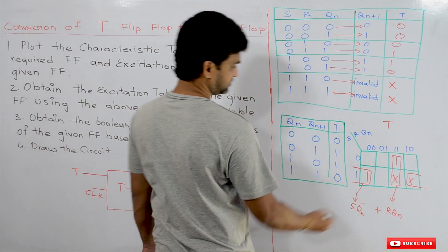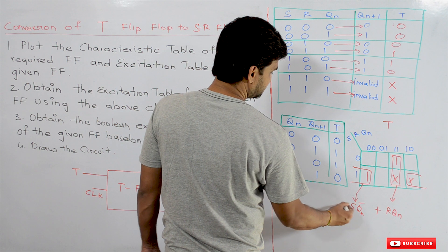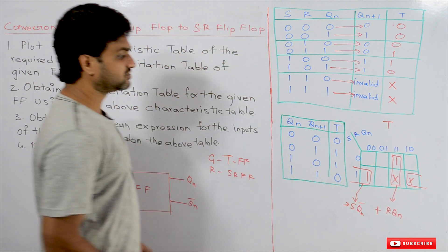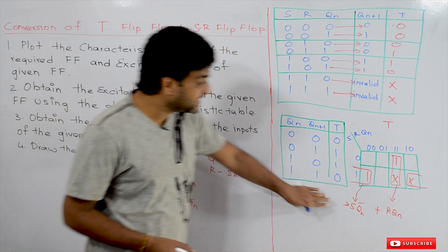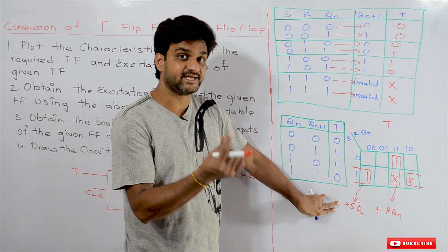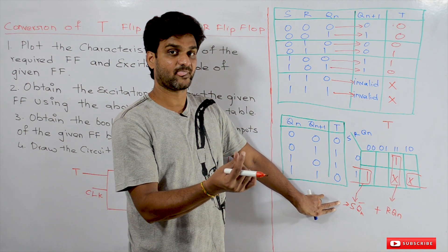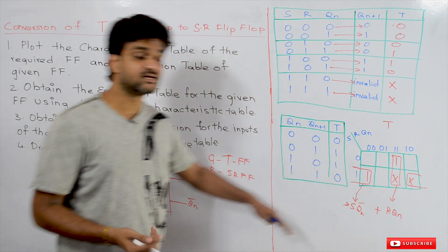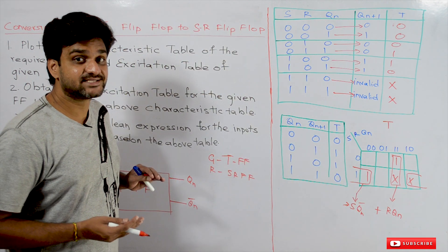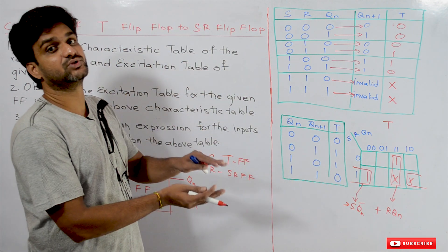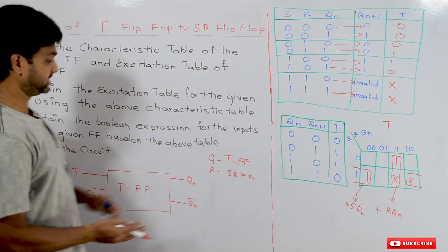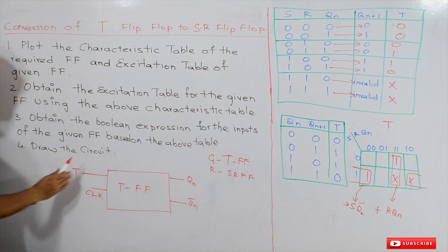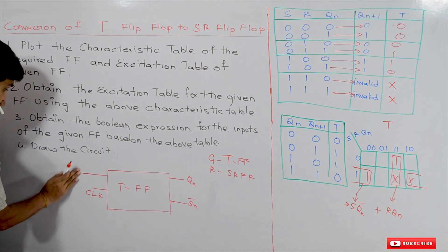This is the function that we have to realize, and it has to be provided as the input for T. This extra combinational circuit has to be provided as the input to the T flip-flop. This is the T flip-flop block diagram, and the extra combinational circuit has to be added to it.